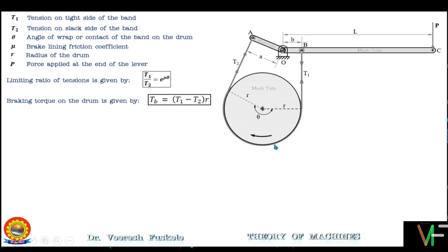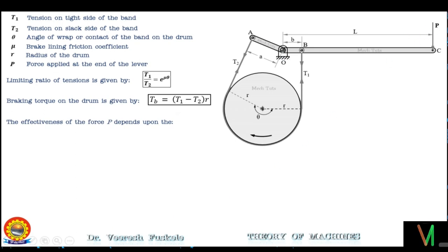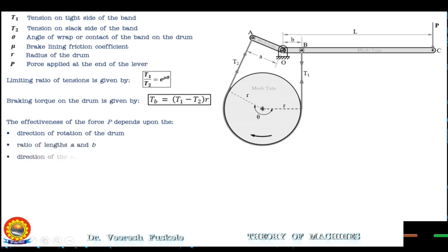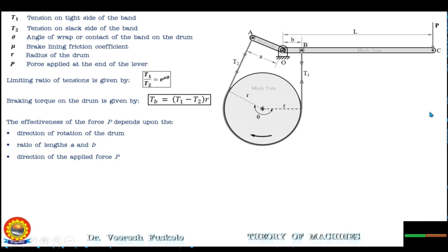In the differential band brake, the band is not connected to the fulcrum as in the case of a simple band brake. The effectiveness of force P depends on: the direction of rotation of the drum, the ratio of lengths a and b, and the direction of the applied force P. Depending on the configuration, force P will be applied either downward or upward depending on the lengths a and b.